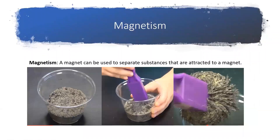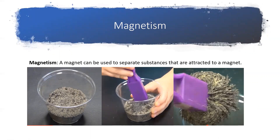Then you have magnetism. A magnet can be used to separate substances that are attracted to a magnet. So if you guys remember the video, there were metal shavings inside a cup with sand. The little girl took the cool purple magnet, shook it around and twisted it, and then ended up pulling out just the metal shavings without the sand.